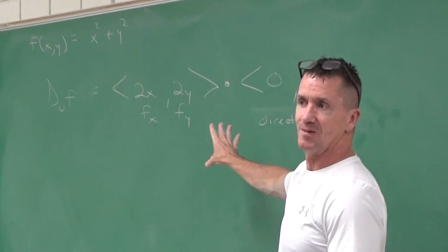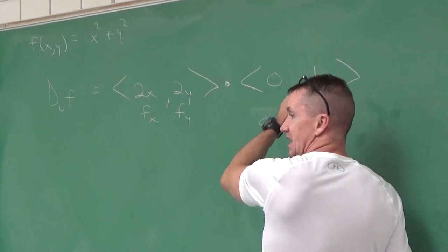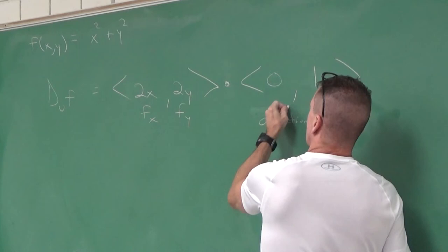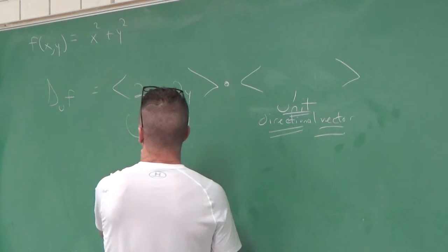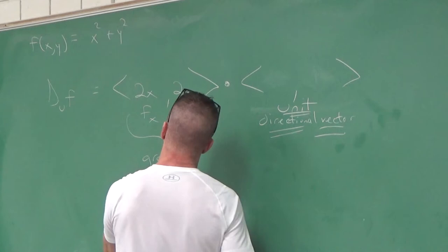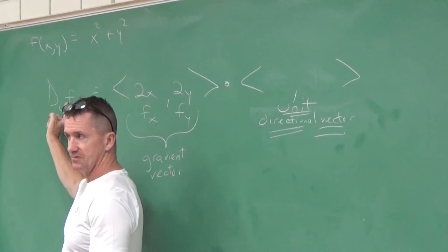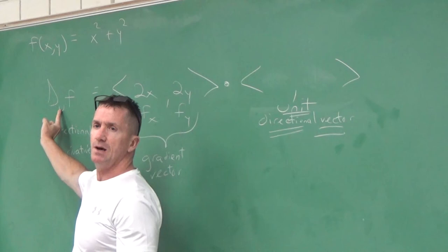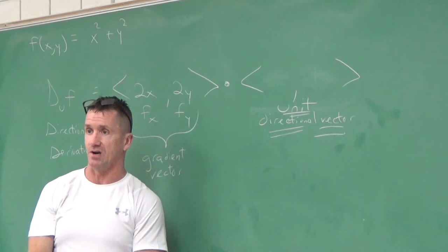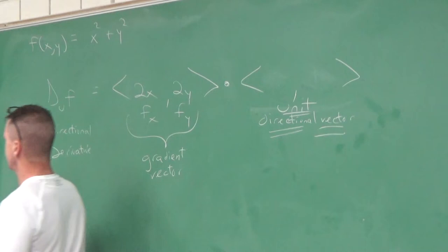This formula lets us compute a derivative in any direction — it doesn't have to be (1,0) or (0,1). The key is the directional vector must be a unit vector. The vector made up of partial derivatives is called the gradient vector, and we take the dot product with the unit directional vector. The notation for directional derivative is D_u f, where u denotes the unit directional vector.